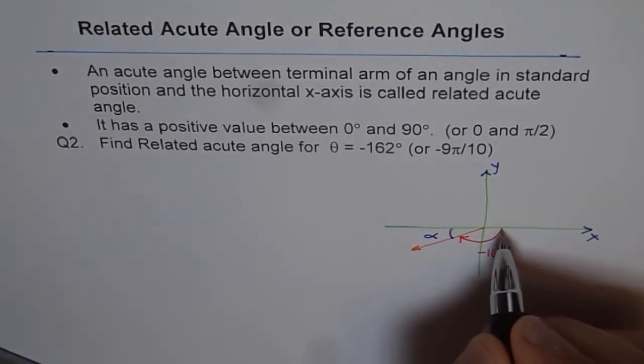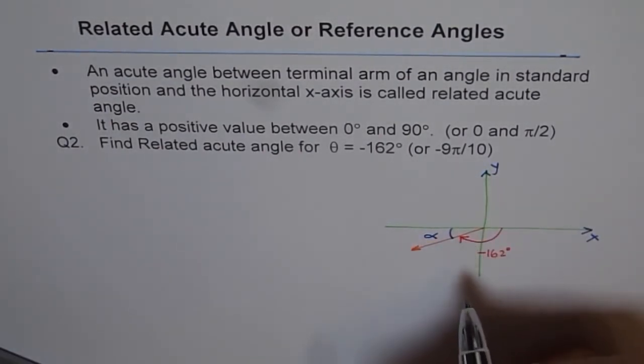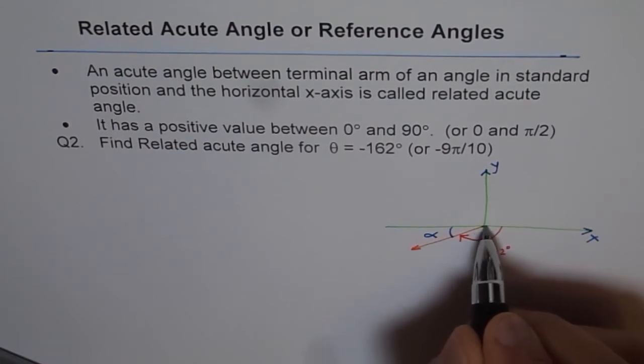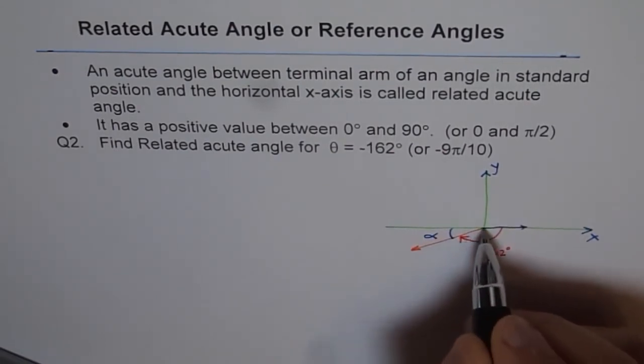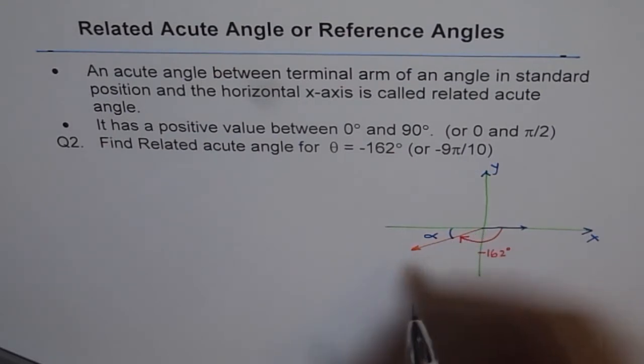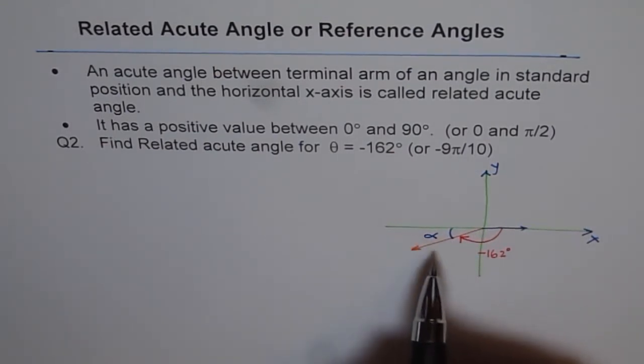And -162 will be clockwise. Initial arm will always be along the x-axis. And the terminal arm is here in quadrant 3. So you can figure out how much is the related acute angle alpha.